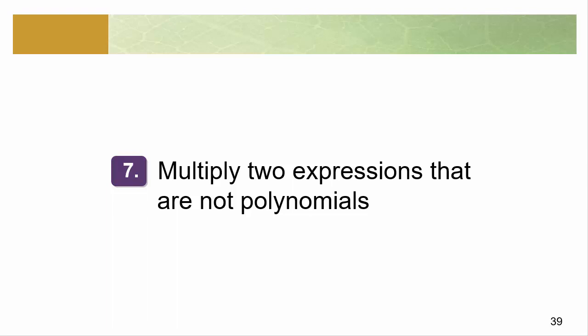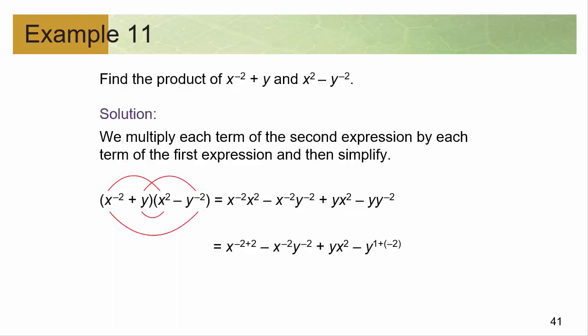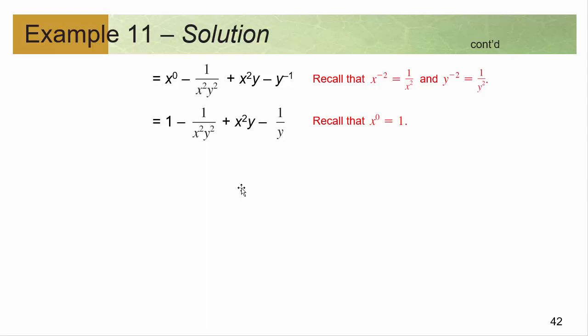Last but not least: how about multiplying two expressions that are not polynomials? Well, guess what — it's still the same thing. Take the first one, distribute it through — multiply it by the first term, multiply it by the second term, then move on to the next piece, multiply it by the first, multiply it by the second, combine any like terms. Remember: if you have x's and y's you can't combine them, but x's with x's combine, y's with y's combine. Clean it up and there's your final answer. It doesn't matter what you're multiplying — the rules don't change. It's just being systematic: grab the first term, multiply through, move on to the next term, multiply through, keep repeating until you've gone through all of them. Then combine like terms, clean it up, and you're done. That is everything we need to know for multiplying polynomials.